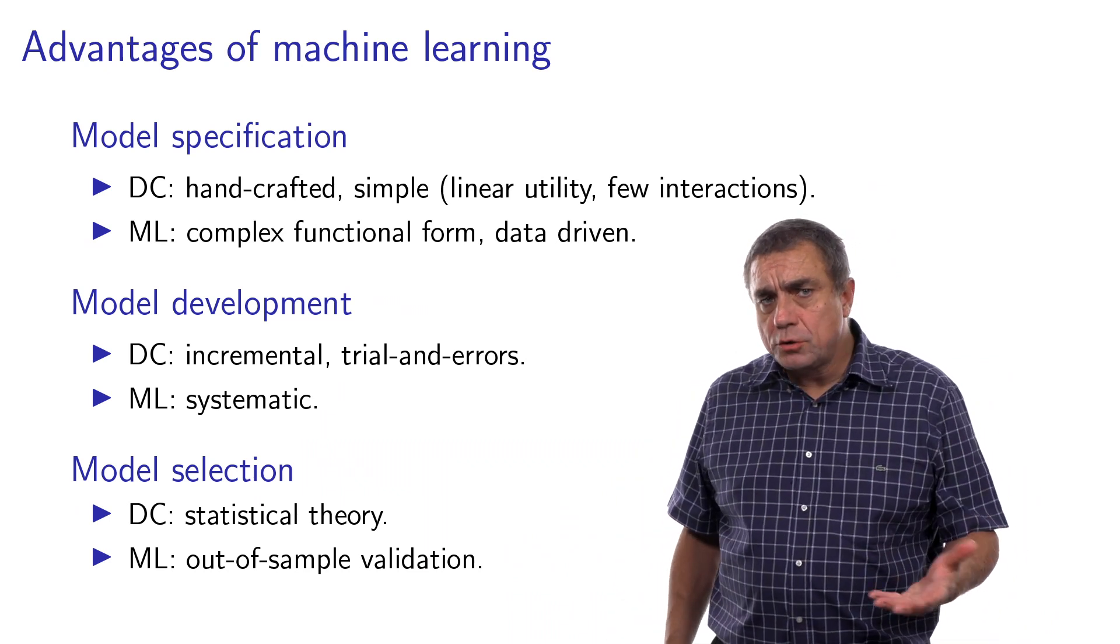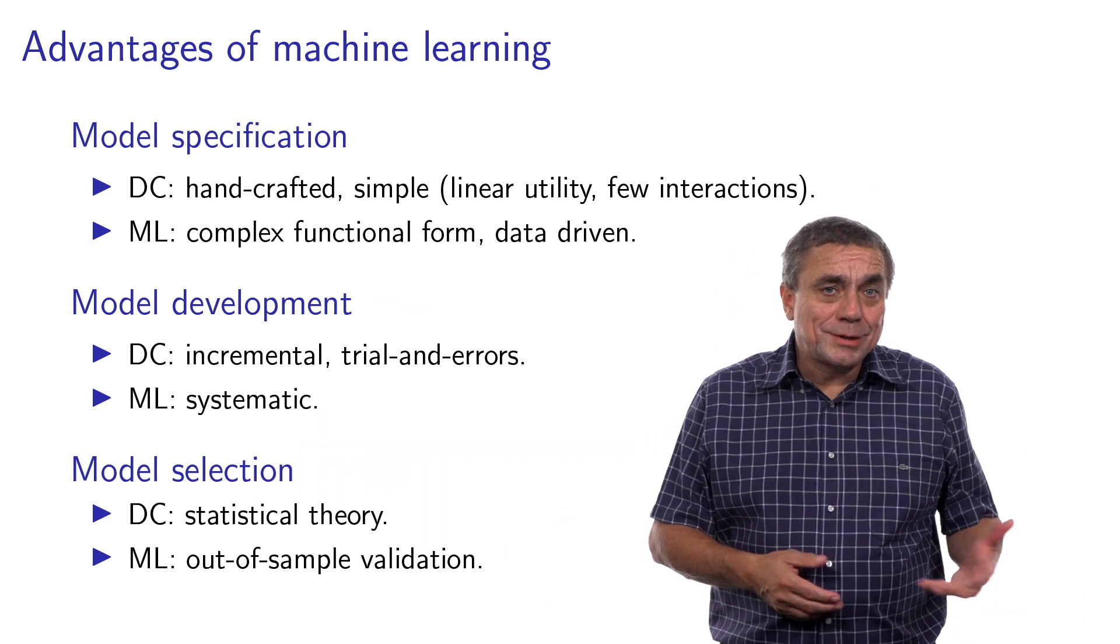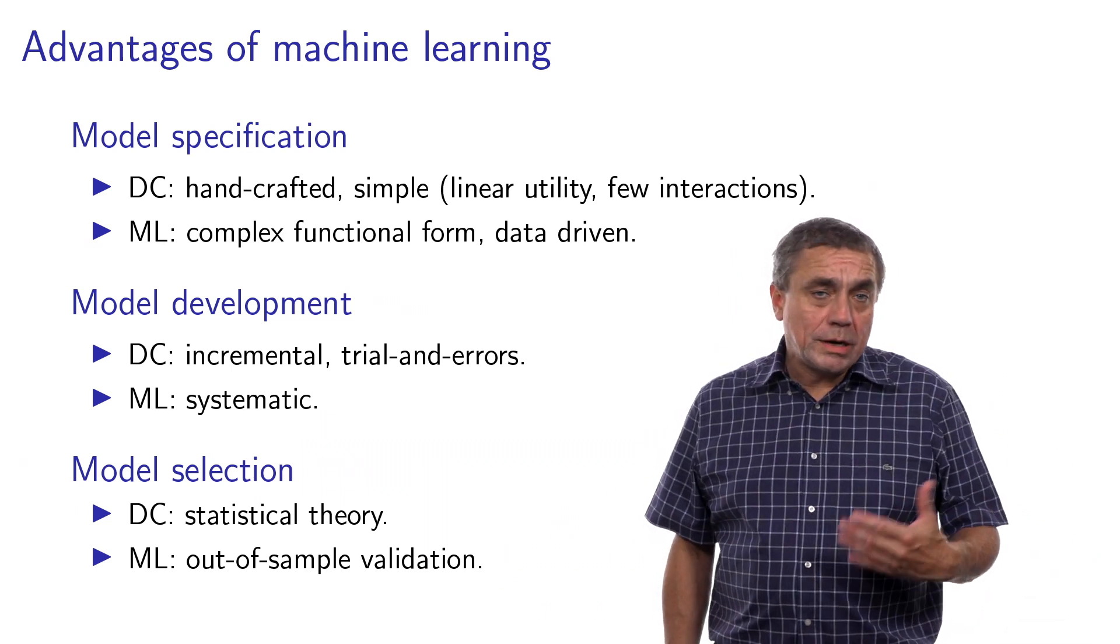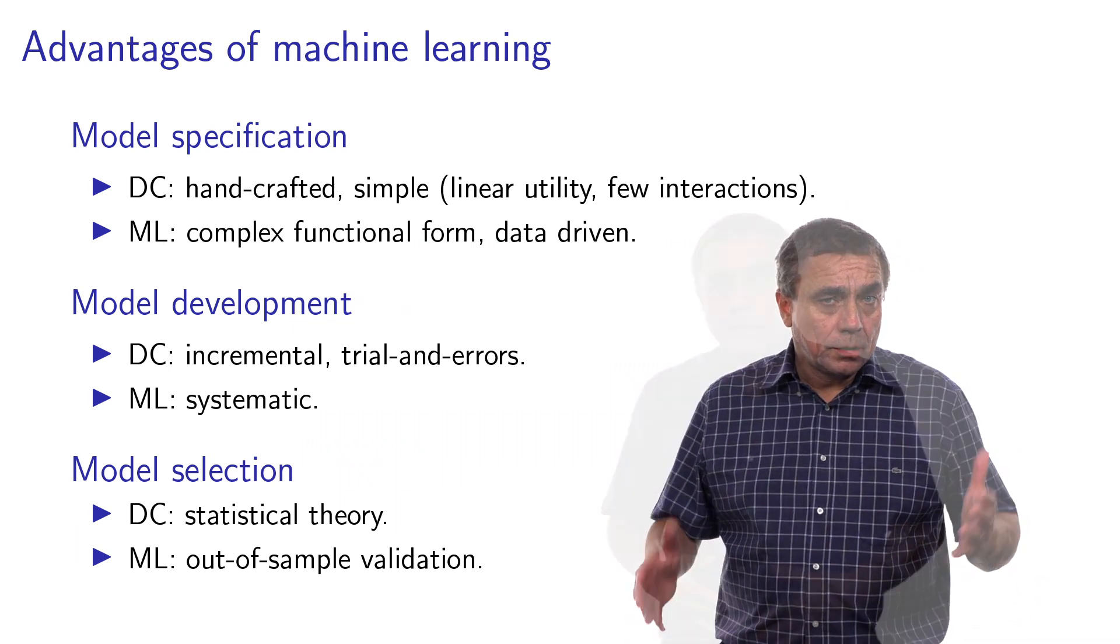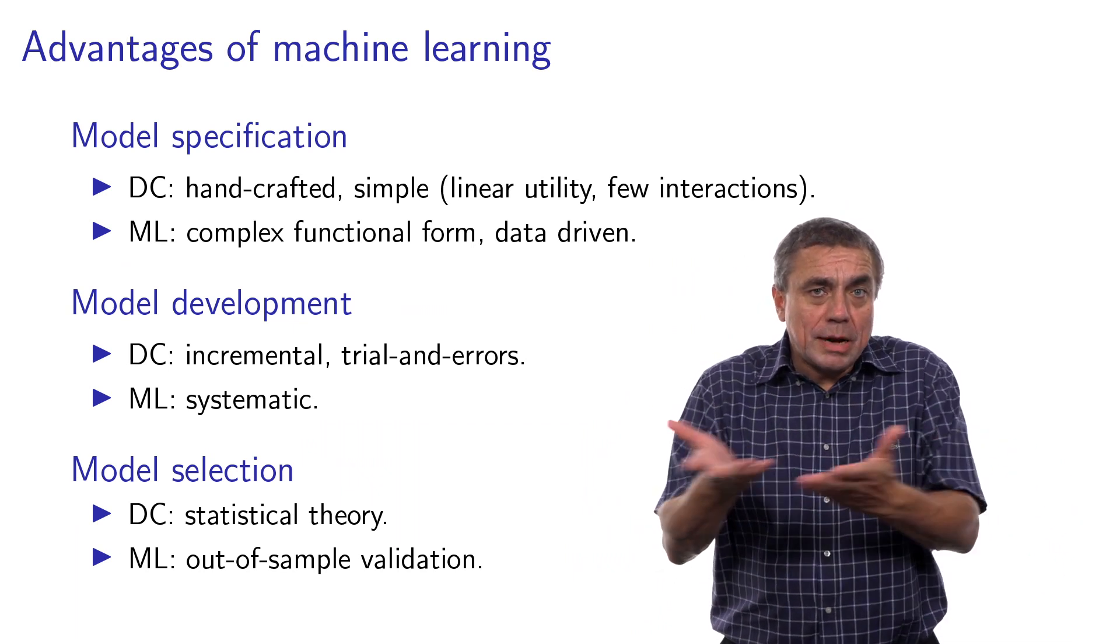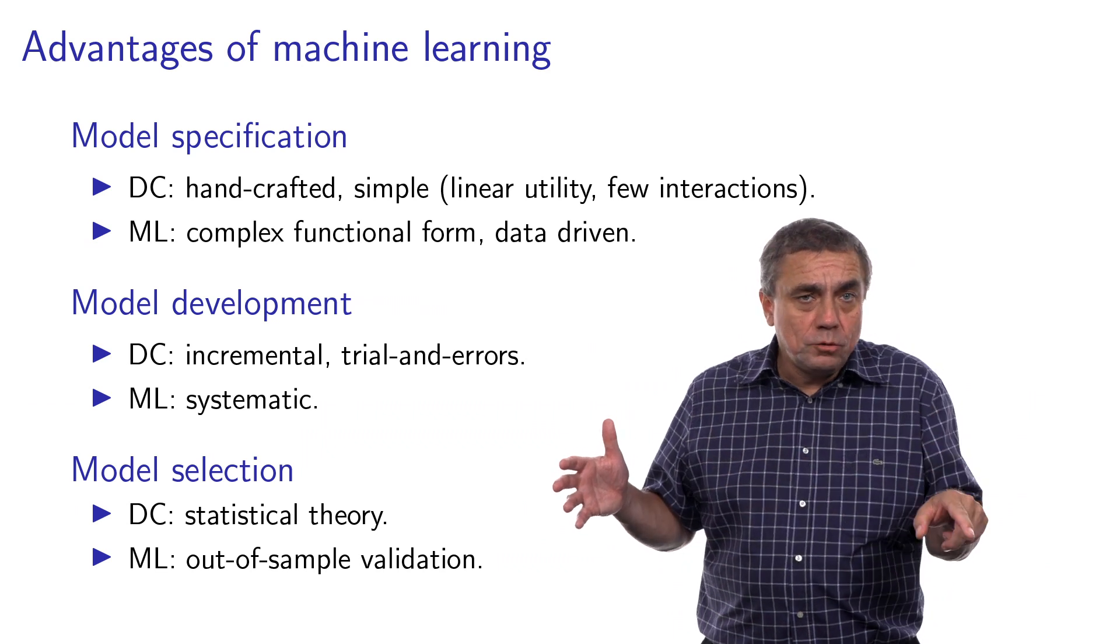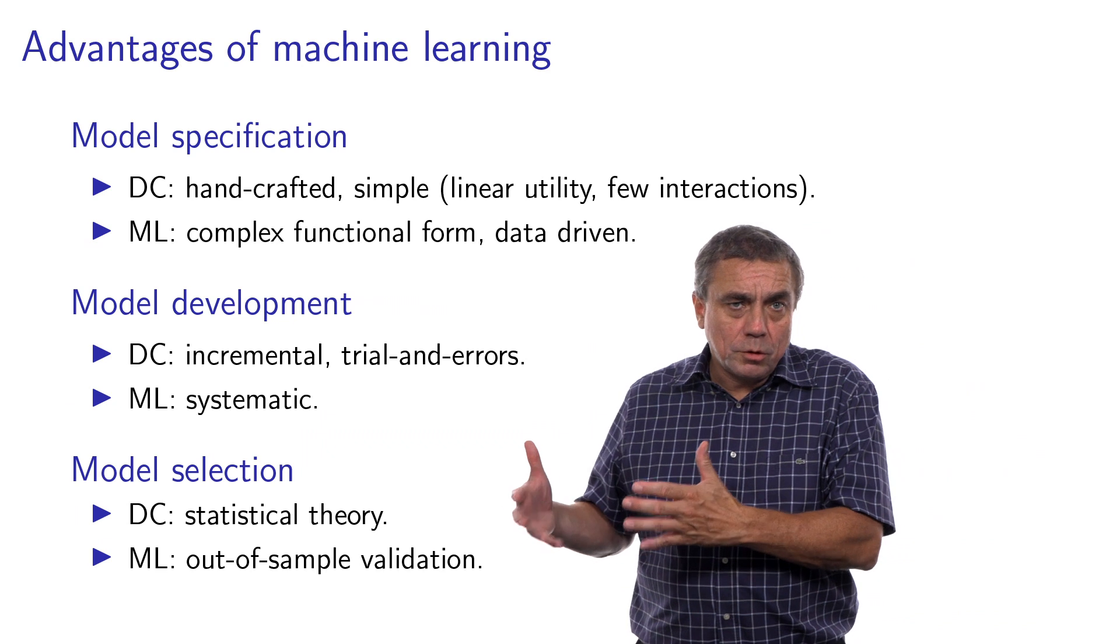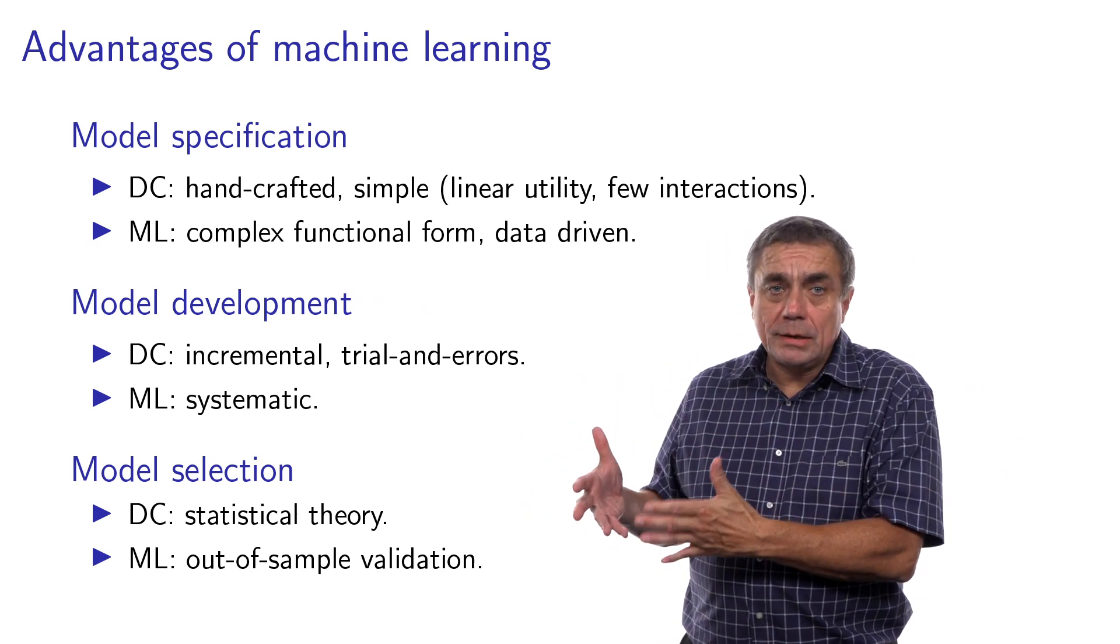The procedure for model selection is also quite different. In the context of discrete choice, we rely on statistical theory and hypothesis testing. While in the context of machine learning, out-of-sample validation is preferred. The model is trained on a training set, and then applied on a validation set, containing data that has not been used for the training. And the validity of the model depends on the quality of the prediction the model performs on the validation set.